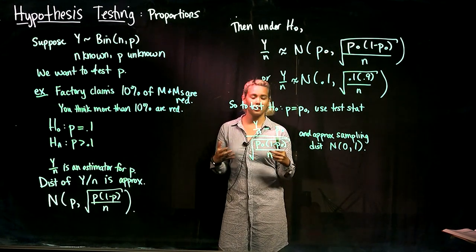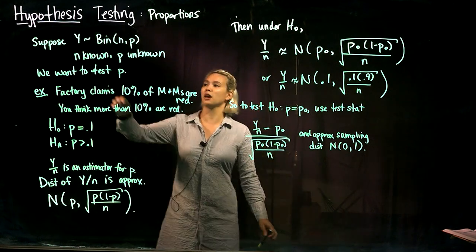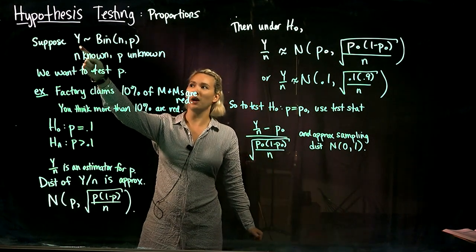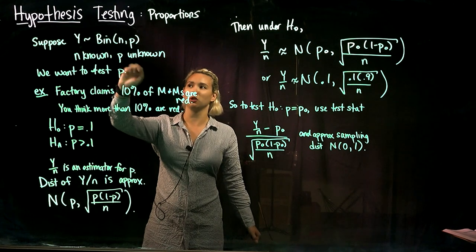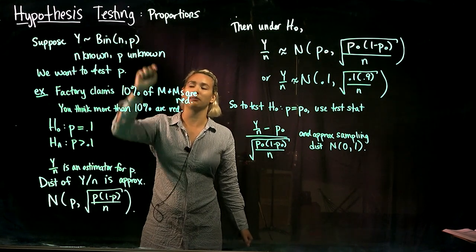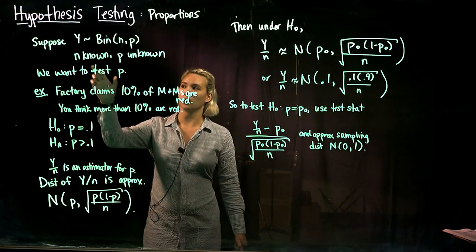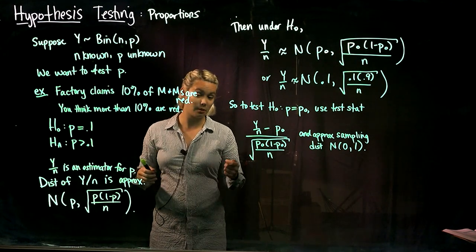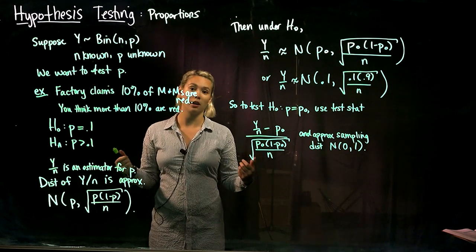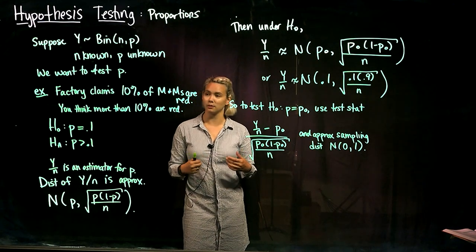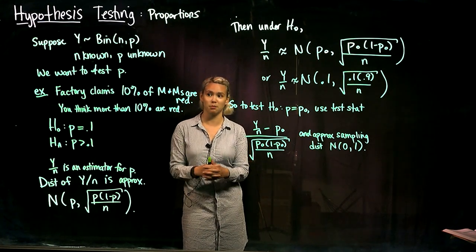What's our setup for the proportions? Suppose we have a random variable Y with a binomial distribution with n trials and probability of success p. So n is known - in other words, we know how many times we flip the coin, but p is unknown. We don't know the probability of heads or tails. So we want to test p.